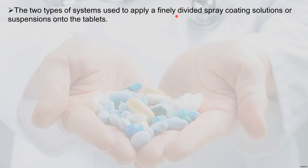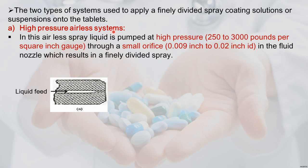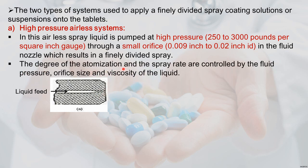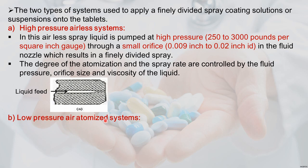Two types of systems apply the spray: first is the high-pressure airless system. There is no atomizing air — only liquid is fed. Liquid is pumped at high pressure, 250 to 3000 psig, through a small orifice of 0.009 to 0.02 inches in the fluid nozzle, resulting in finely divided spray. The degree of atomization and spray rate are controlled by fluid pressure, orifice size, and liquid viscosity.